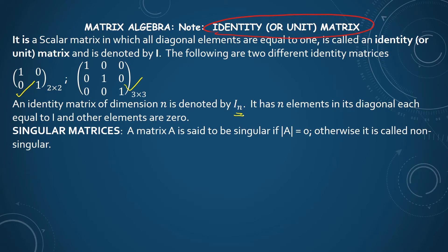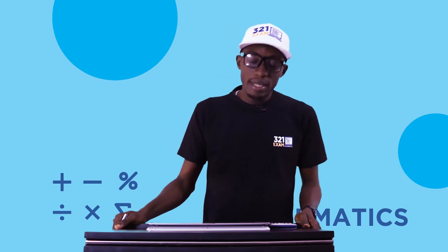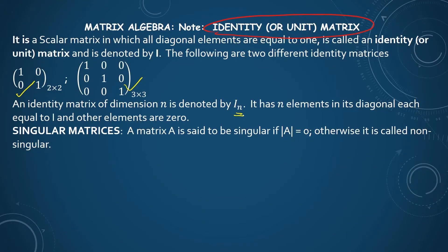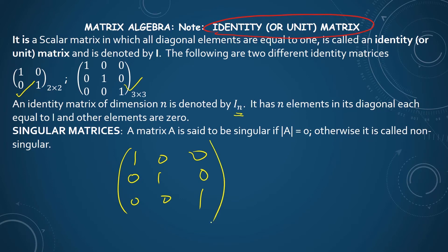What we are saying is that when we have elements in a matrix such that it is only the elements on the principal diagonal that are equal to 1 and every other element is 0, such a matrix is called the identity matrix. The principal diagonal runs from top-left to bottom-right. All elements on the principal diagonal are 1, and every other element is 0. Whenever you have a matrix of this structure, it is called the identity matrix.